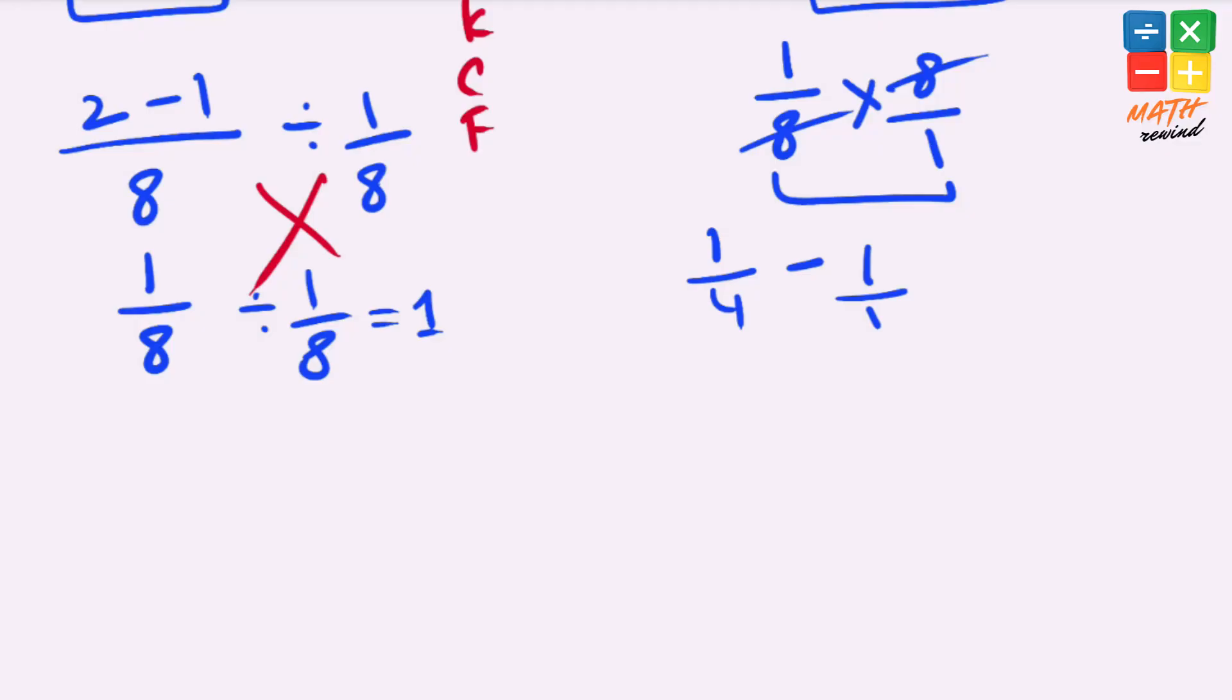Now we have to simplify this fraction. To add or subtract fractions, the rule is we need to have a common denominator. So 4 is a common denominator here because when you multiply two denominators that gives you a common denominator. 4 times 1 gives us 4.